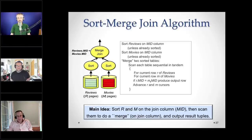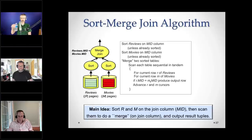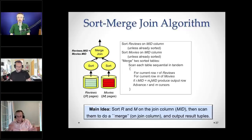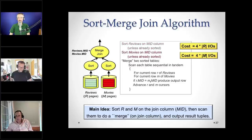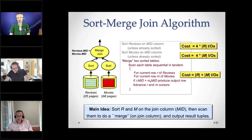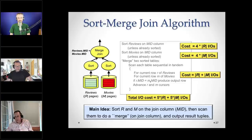Here's the sort merge algorithm: sort reviews, sort movies, then merge. A cursor pulls a row from reviews and a row from movies, moving downward in both tables looking for matches. Once the two tables are sorted, it makes one sequential pass. Sorting can be done by reading and writing a table basically twice — read it, produce sorted runs, write those runs, then merge them. So the total cost is roughly four times the number of pages in I/Os, plus a final scan — about five passes over each table.